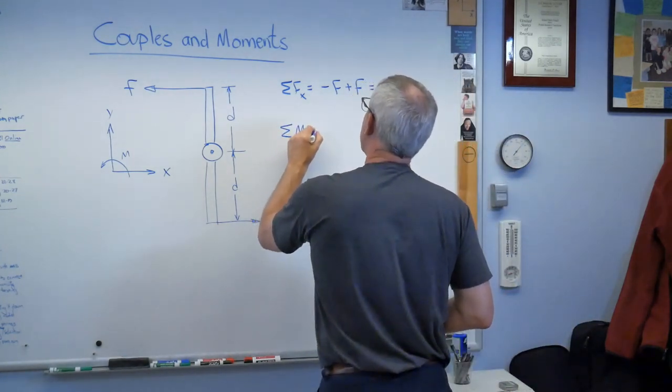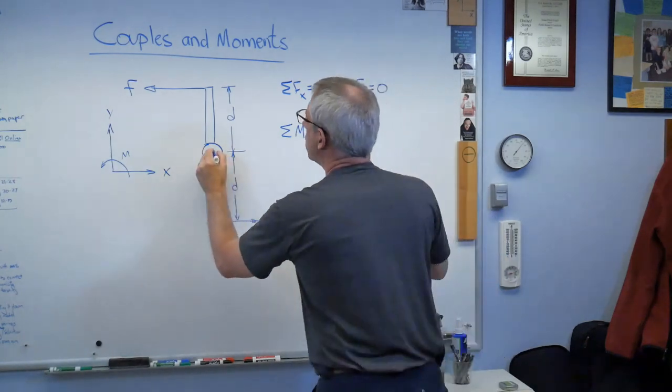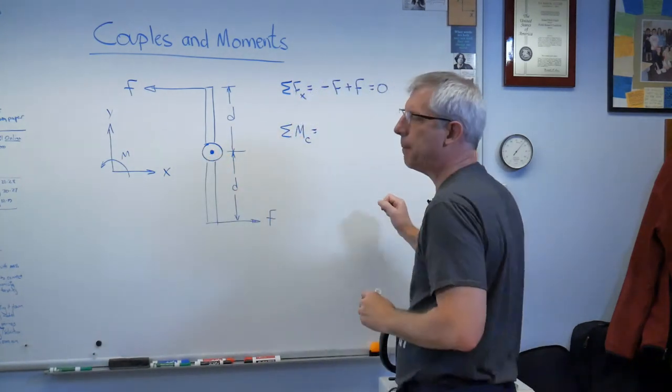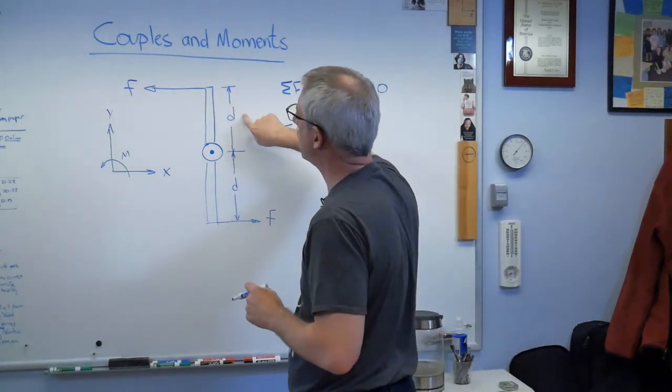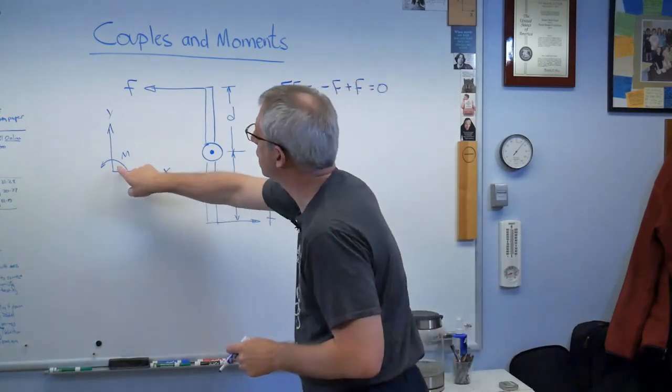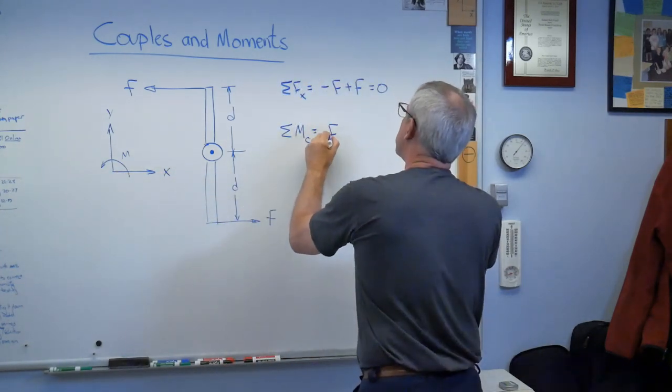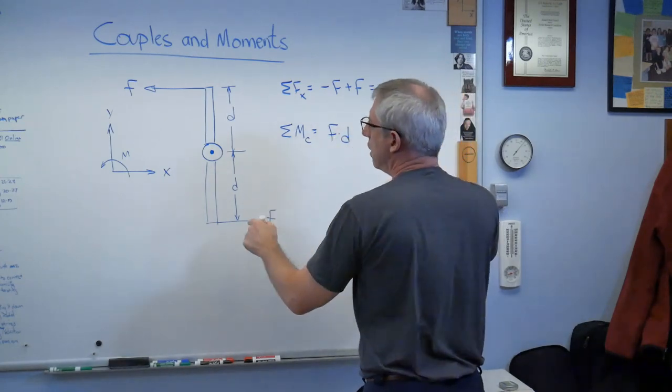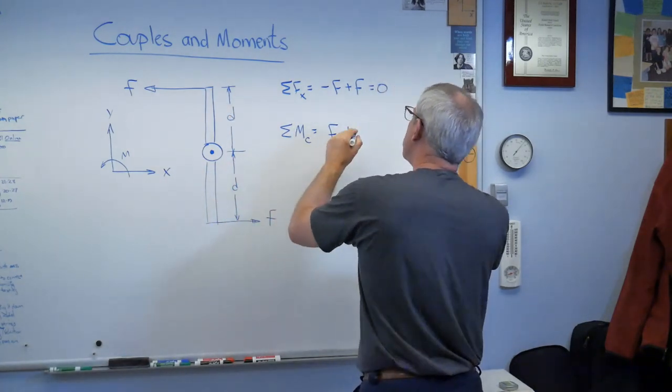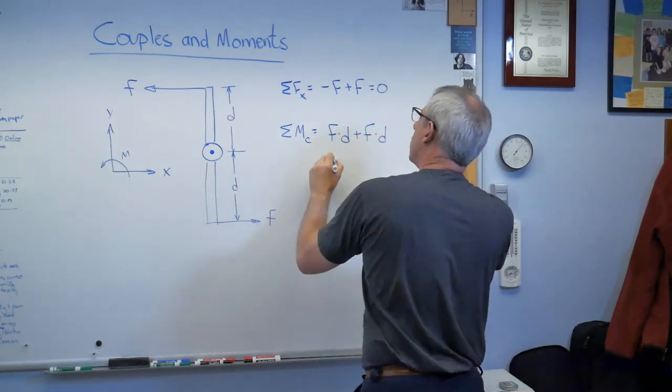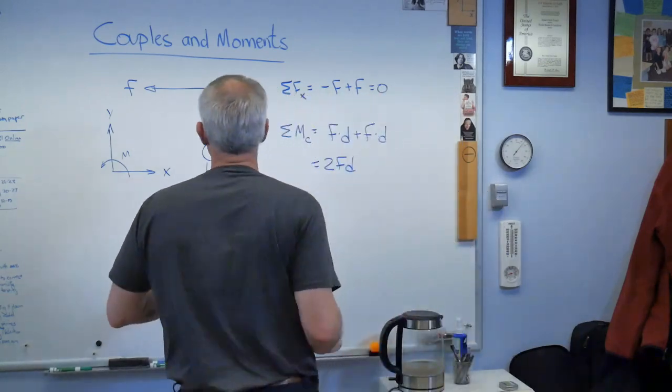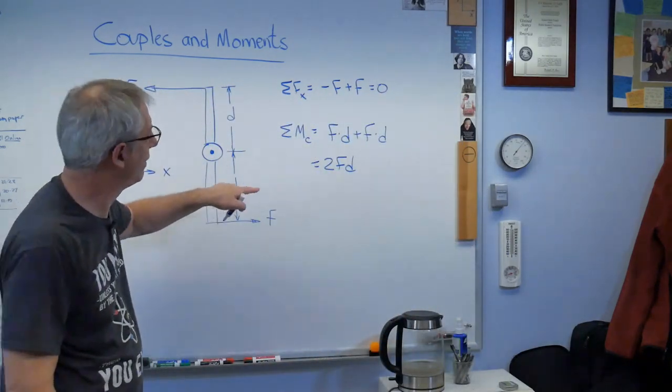Only when I start looking at moments do I get something interesting. Well, let's just figure the moments about the center there, okay? Well, the first one is a force acting at a distance d, and it's trying to make the shaft turn counterclockwise. And that's my positive sign convention. So that's positive, f times d. This one also wants to turn in the positive direction. It's also f times d. So this is a couple. That's the moment. Every couple has its moment.